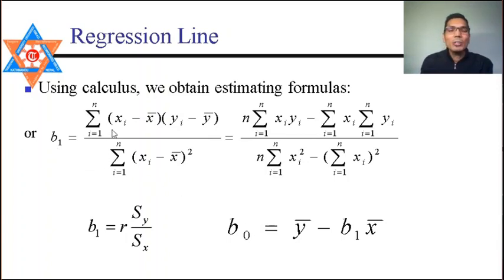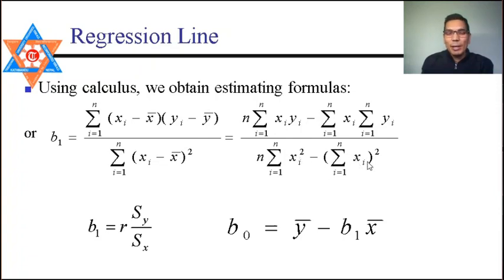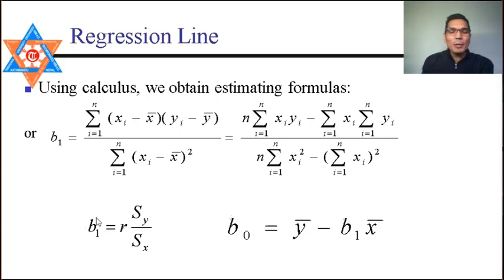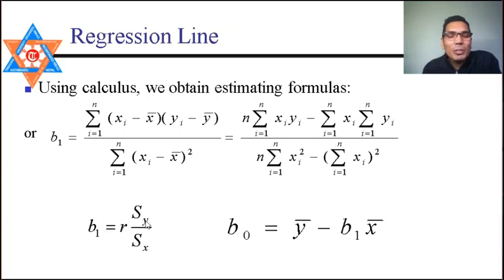Using calculus, the value of b₁ is: b₁ = Σ(x − x̄)(y − ȳ) / Σ(x − x̄)², which on expansion gives b₁ = [nΣxy − ΣxΣy] / [nΣx² − (Σx)²]. Then b₀ = ȳ − b₁x̄. Alternatively, b₁ can be found using b₁ = r × (Sy/Sx), where r is the correlation coefficient and Sy, Sx are standard deviations.